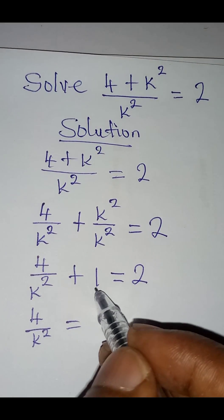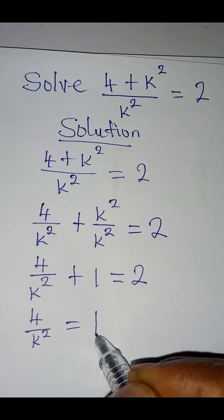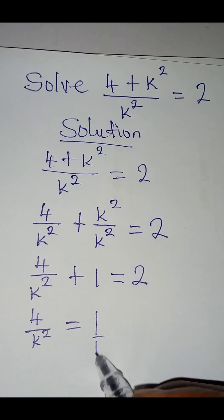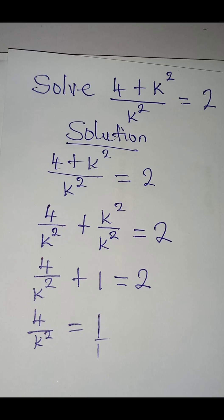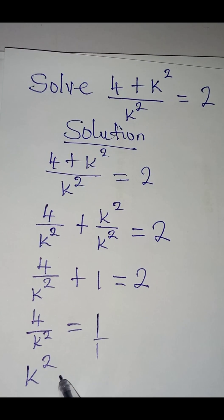2 minus 1 will now give us 1. From here, we believe this is over 1, so we can cross multiply. And when I do that, I'm going to have k squared to be equal to 4 times 1, and that is 4.